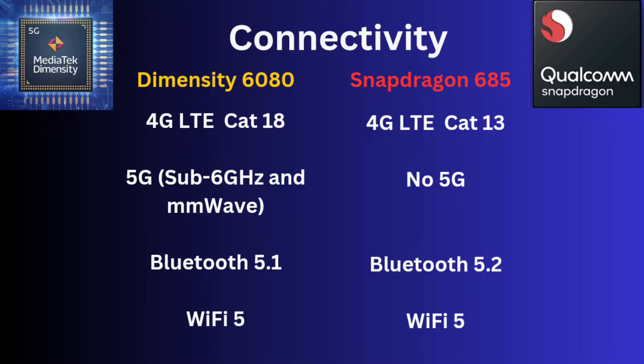For connectivity, there's absolutely no question — the Dimensity 6080 runs away with it. The Dimensity 6080 supports 4G Cat 18, which is very fast, while the Snapdragon 685 only has 4G Cat 13 — it's okay but not great. Crucially, the Dimensity 6080 supports 5G while the Snapdragon 685 does not. If you want 5G, you'll need the 6080. Both are tied on Wi-Fi 5, though the Snapdragon 685 has a slightly better Bluetooth 5.2 versus Bluetooth 5.1 on the Dimensity 6080.